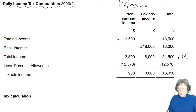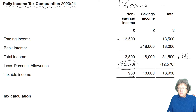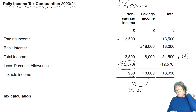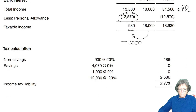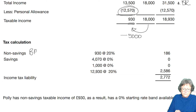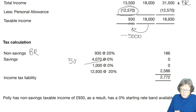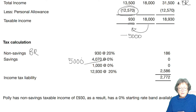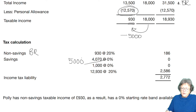We then deduct the personal allowance. The personal allowance, obviously, comes off the non-savings income first, leaving just £930 of non-savings income, which means there is some income that can go in before we get to £5,000. That's why I wanted to give you this example. So the non-savings income is taxed at basic rate. The savings income total there is £5,000 — so £930 and £4,070 equals £5,000. That's the first £5,000, therefore £4,070 of it will be taxed at the starting rate.